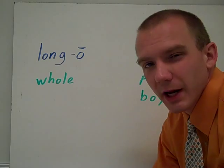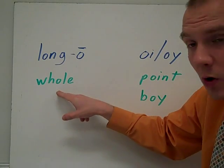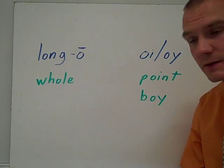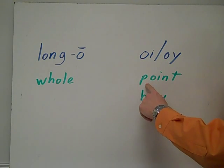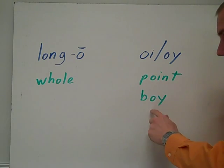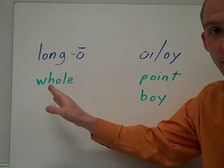It's about the OI sound and we're going to compare it to the long O sound like you hear in the word whole. And then we have the OI sound which has two spellings. You can spell it OI or OY like in point or boy. Point, boy, both make the OI sound as compared to your long O sound in whole.